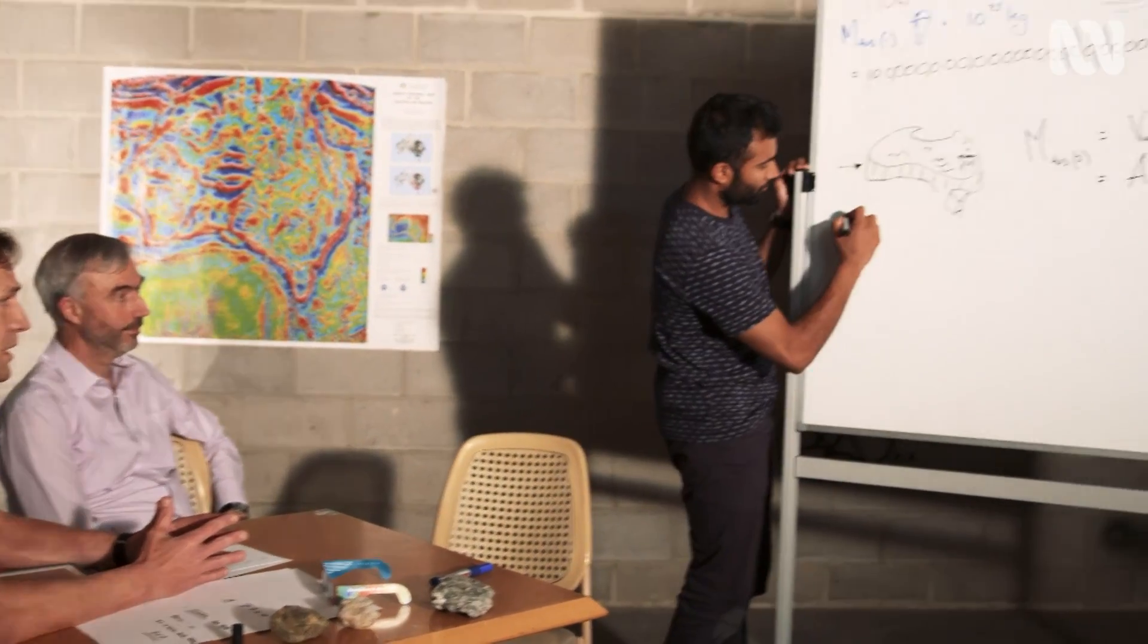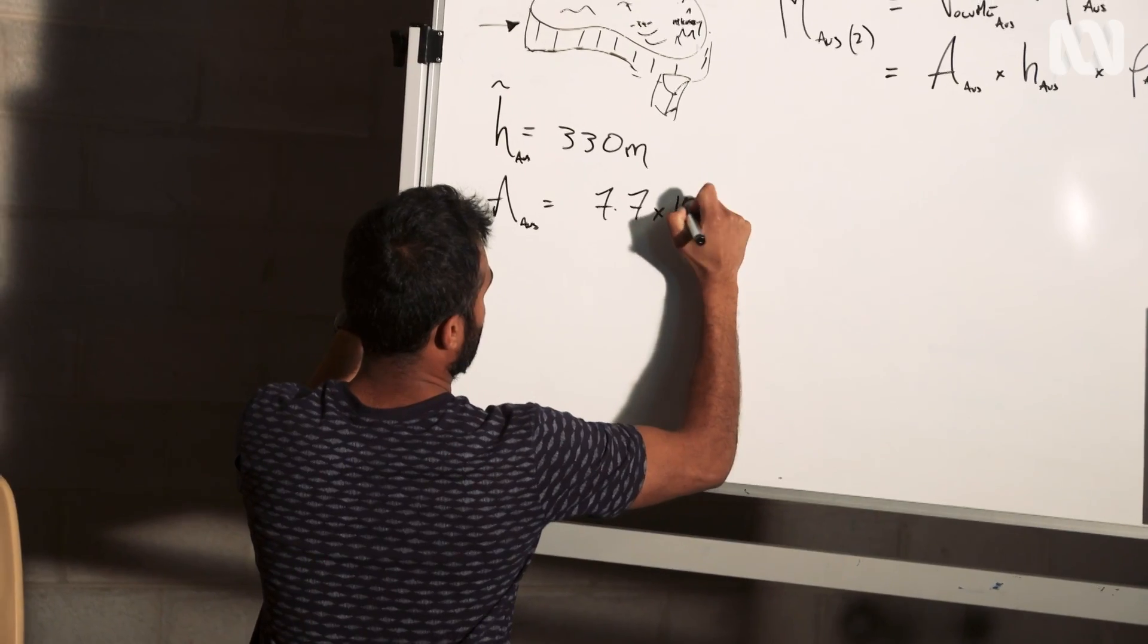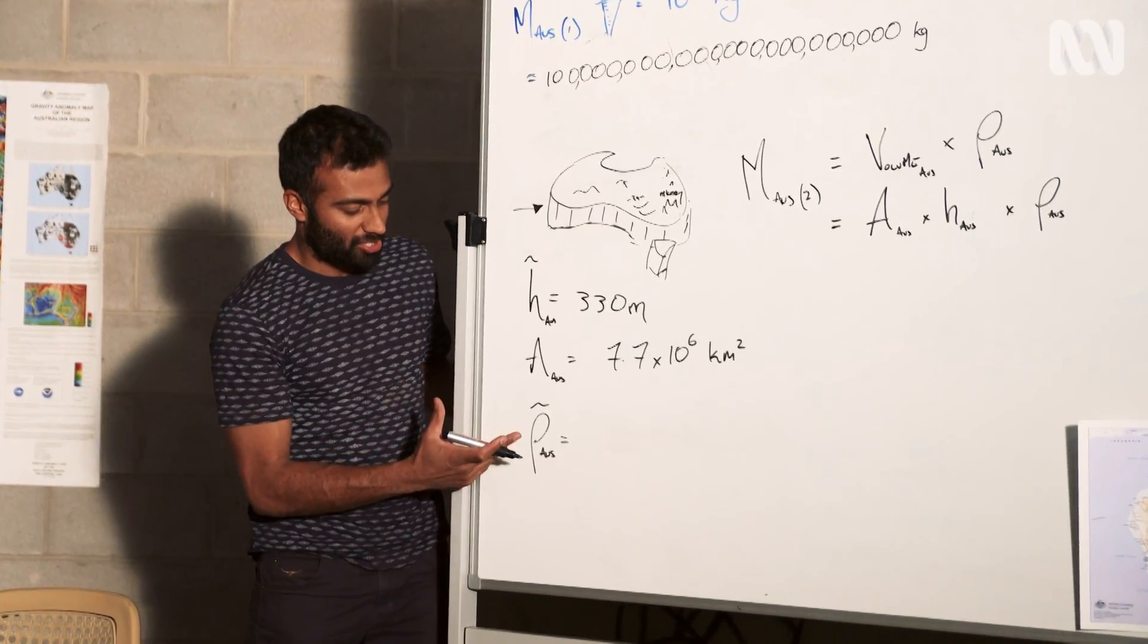Yeah, we know it's 330 metres. 330 metres on average above sea level. Average area of Australia we know from before, 7.7 times 10 to the 6. So the third thing we need is the average density of Australia.